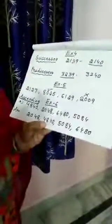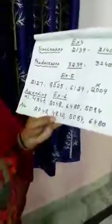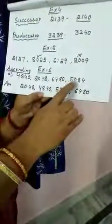Exercise 6 — Ascending Order. Ascending means smaller to bigger; we will write from small to big. Take these numbers: 4840, 2048, 6480, 5084. First, pick out the smallest number — 2048. Next: 4840, then 5084, then 6480.